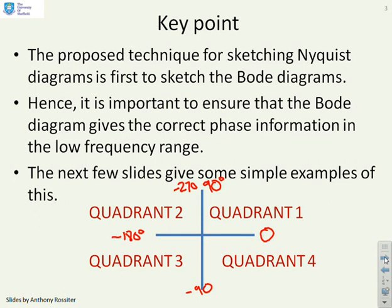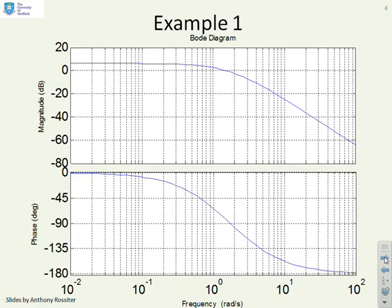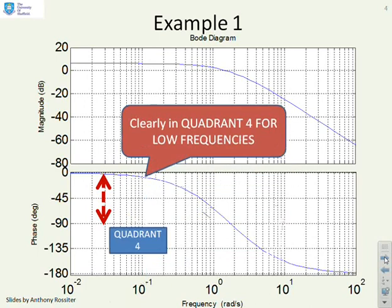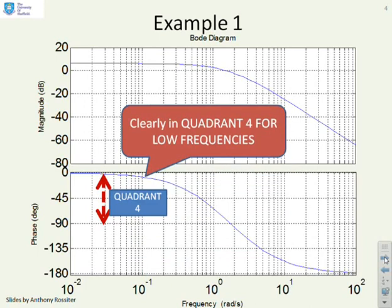So if we've got the Bode diagrams already, then you'll see identifying the quadrants is straightforward. Here's an example. You'll see we've already got the Bode diagram, so for low frequencies you can see the phase is between 0 and minus 90, and therefore clearly this is in quadrant 4. For high frequencies the phase is between minus 90 and minus 180, and therefore clearly this is in quadrant 3.